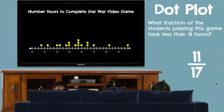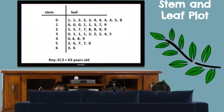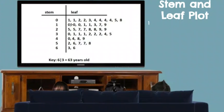Now let's move on to stem and leaf plots. Think of this as the stem on the left and the leaves on the right. The key tells us what our stem represents — in this example, 6 on the left and 3 on the right means 63. So the stem is the tens place and the leaves are the ones place. For this problem, a stem of 0 with a leaf of 1 gives us just 1, since we don't need to write the 0 in the tens place.